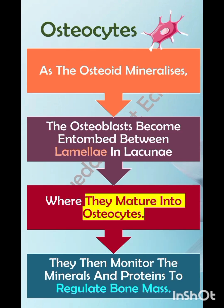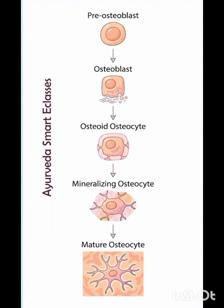As the osteoid mineralizes, osteoblasts become embedded between the lamellae in lacunae, where they mature into osteocytes. These osteocytes then monitor minerals and proteins to regulate bone mass. The progression goes from pre-osteoblast to osteoblast, then to osteoid-secreting osteocyte, mineralizing osteocyte, and finally mature osteocyte.